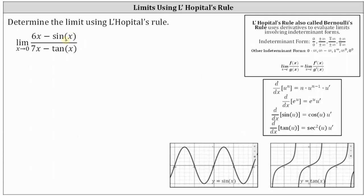If you need the review, I graphed y equals sine x at the bottom. Looking at the graph of y equals sine x, notice as we approach x equals zero from the right and from the left, we are approaching the y value or function value of zero. So the numerator approaches zero. In the denominator, as x approaches zero, 7x approaches zero, and so does tangent x. The denominator also approaches zero. I graphed y equals tangent x at the bottom, and as we approach x equals zero from the right and from the left, we are approaching the y value or function value of zero.